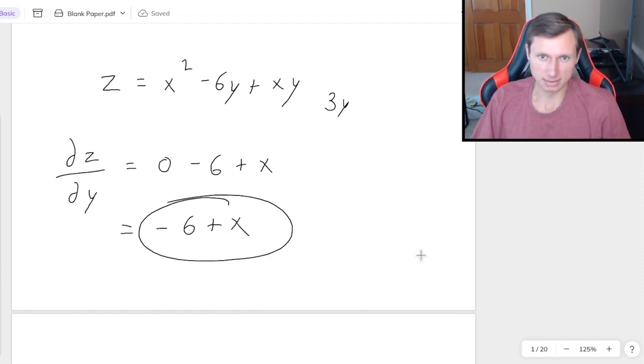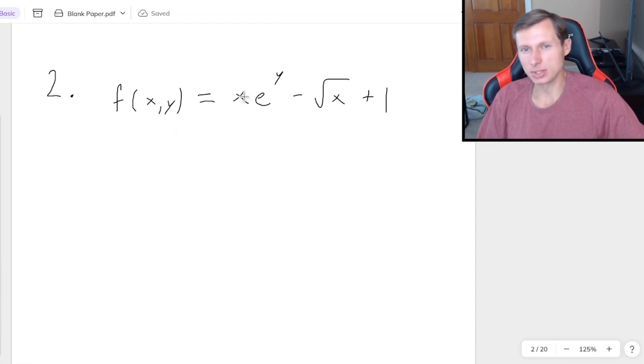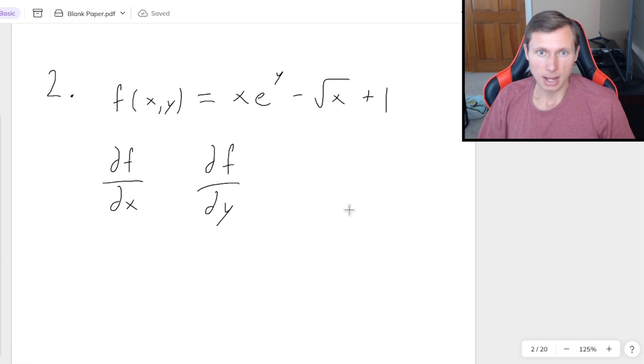And now let's do another one. For this one, we have f of xy equals xe to the y minus root x plus 1. First thing I want to address, obviously it's different, before it was z equals, now it's f of xy equals. It's identical, it's the same idea, it's not going to change how we solve this problem. But one thing I will say, now there's two notations I can give here. One notation is partial f partial x, and of course partial f partial y. That's one way we can write this. But my personal favorite is, I can write f sub x and f sub y.